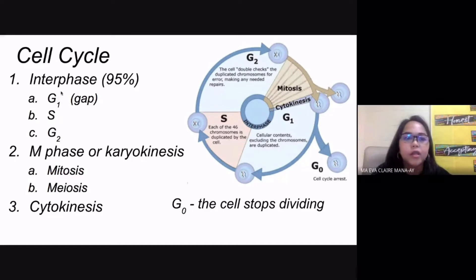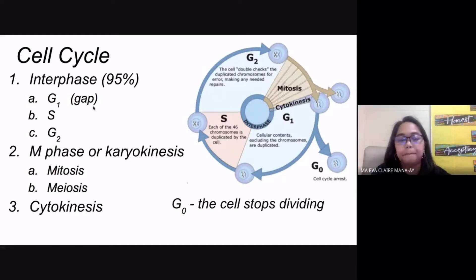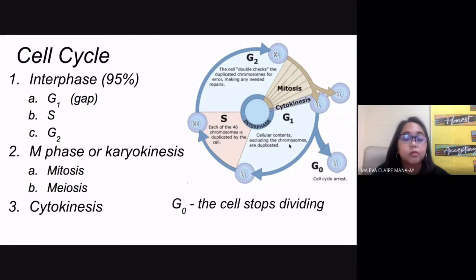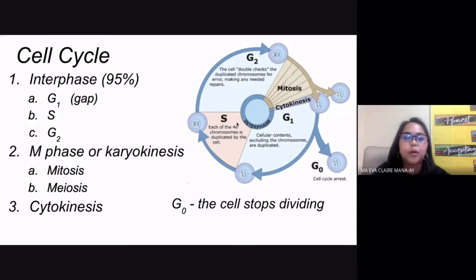The three stages of interphase are G1 (GAP 1), S phase, and G2. The G stands for GAP — these are checkpoints in the cell cycle. During G1, which comes before the S phase, the cell prepares for the S phase. Cellular contents are duplicated, except for the chromosomes. The rest of the cell's parts are duplicated during G1.